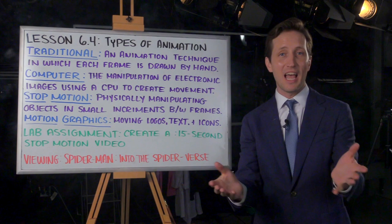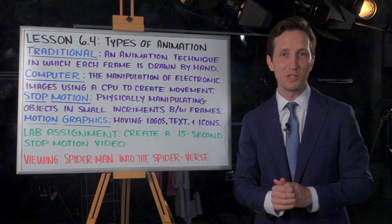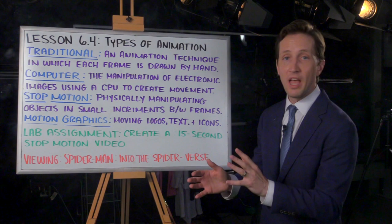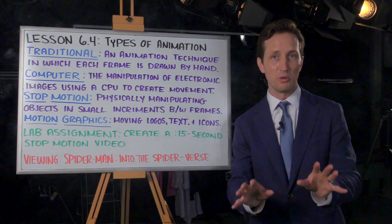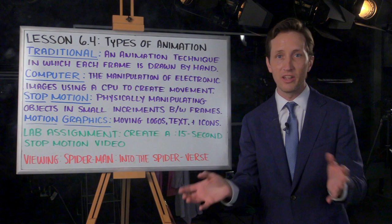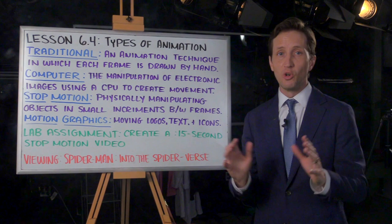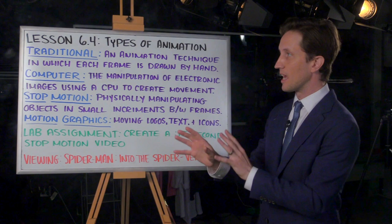Your lab assignment this week is to create another 15-second stop motion video. The only difference is that you won't have time to work on these labs in class like you did last week, so getting started might be a little more difficult. When you're doing this on your own, here are a couple of tips. First, you'll want to make sure the camera is locked down on a tripod or some sort of mount to avoid shaking, because every time the camera shakes it's going to move your subject around the frame. Second, make sure you have complete control over the lights to avoid any unwanted strobing.